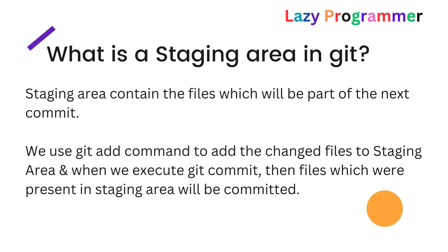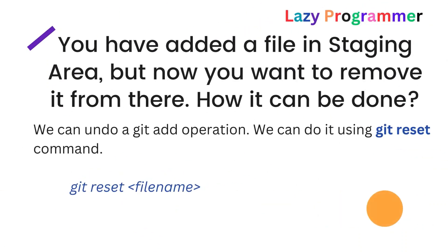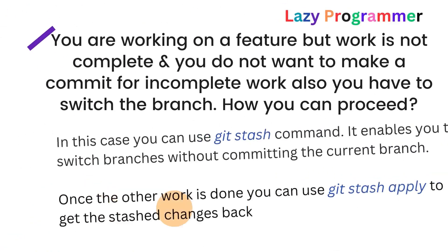Now for scenario-based questions. Suppose you have added a file to the staging area but now want to remove it due to some other changes required. To remove a file from the staging area, you can undo the git add operation using the git reset command. The syntax is: 'git reset <filename>' — the file will be removed from the staging area and moved back to the untracked state.